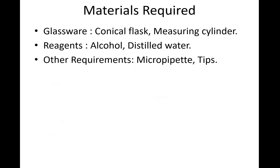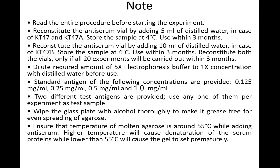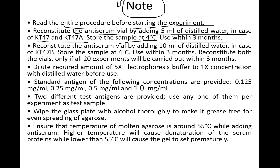Additional materials required include a glass base, conical flask, measuring cylinders, reagents such as alcohol and distilled water, and micropipettes with tips. Important notes include: read the entire procedure before starting; reconstitute the antiserum by adding 5 ml or 10 ml of distilled water depending on the kit (KT47 or KT47A); store antiserum at 4°C and use within three months; dilute the 5x electrophoresis buffer to 1x with distilled water before use.